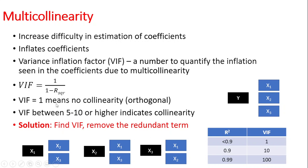VIF of 1 means there is no collinearity, usually it can be that when your R square is less than 0.9 then your VIF might be 1, but if it is 0.9 or greater it can be 10, and when it is 0.99 it can be 100.